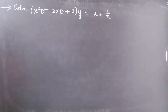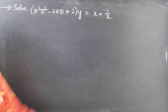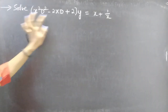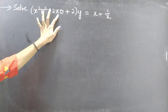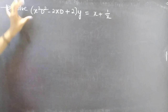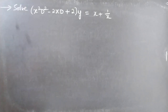Problem: solve x squared D squared minus 2xD plus 2 into y equals x plus 1 by x. We are given a differential equation with variable coefficients, also known as a Cauchy's equation. We are going to reduce this to a differential equation with constant coefficients by making some substitution.